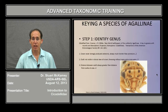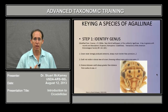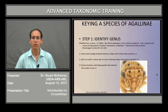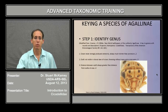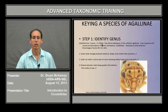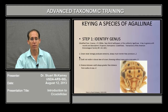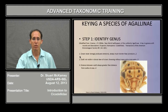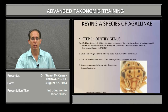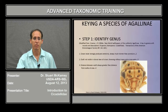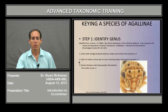Now we're going to key out one species of Agallia to give you an example of what kinds of things you have to look for. First you have to identify the genus, and for this the best source is Kramer 1964, which has a key to all genera in the New World. The first couplet is: crown never strongly produced anteriorly, always much shorter than pronotum. I haven't shown the opposite side of the couplet because it's for an oddball that has never been intercepted. And the same thing with couplet two — the other option is just a very odd thing that you'll never see.